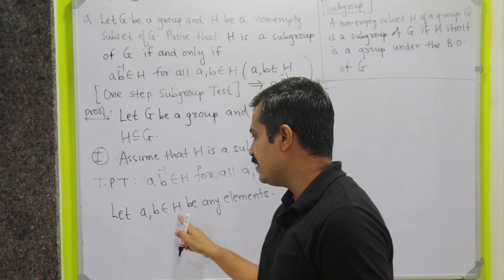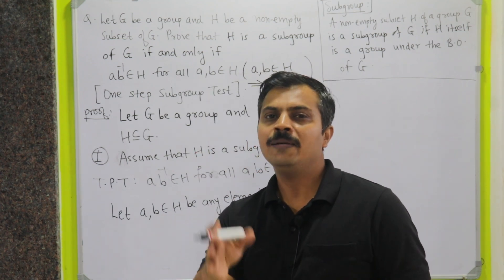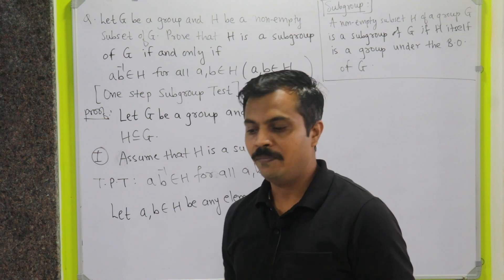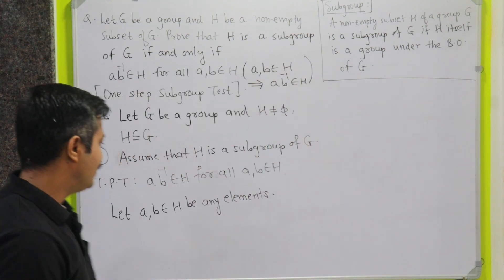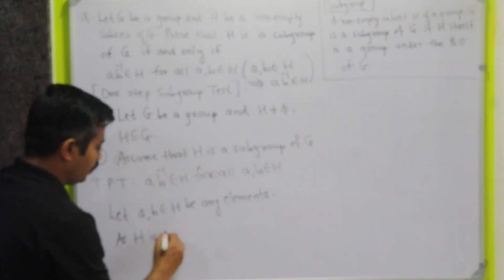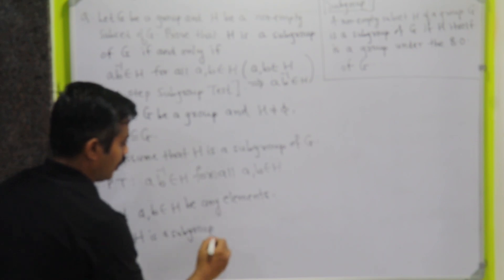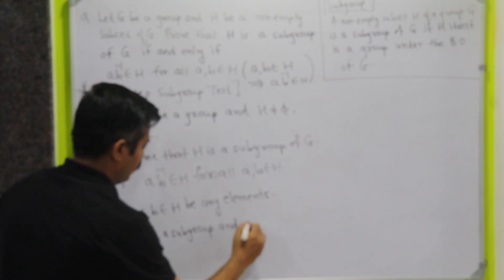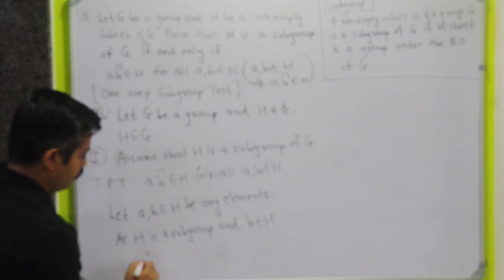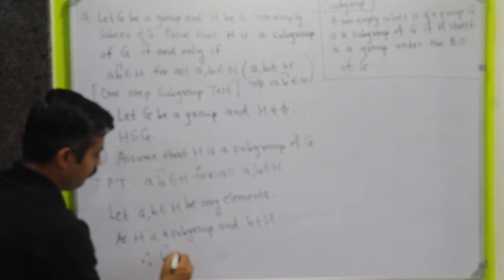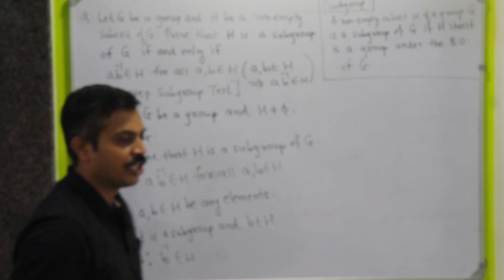In this case, as B is an element of H, so definitely B inverse will be present in H. As H is a subgroup and B belongs to H, therefore B inverse will definitely be an element of H.